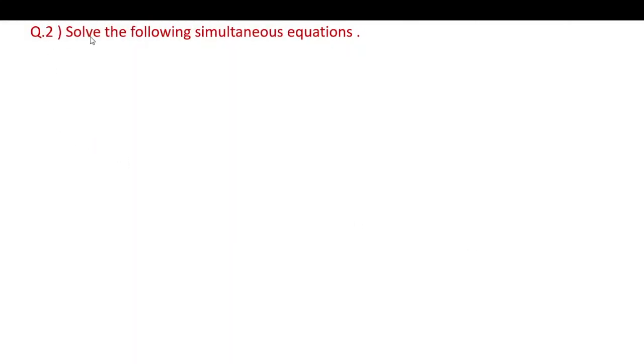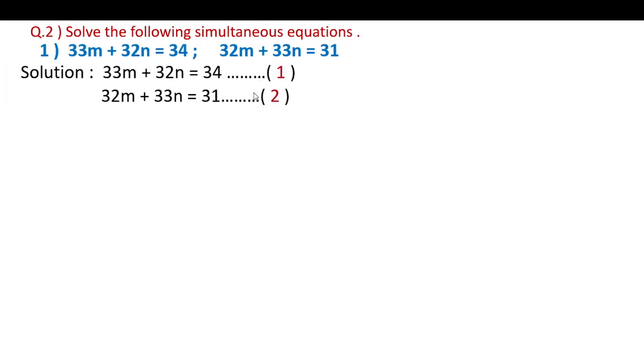Question 2: Solve the following simultaneous equations. First example: 33m plus 32n equals 34, and 32m plus 33n equals 31. These are equations 1 and 2.